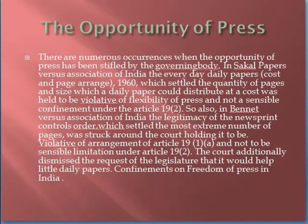There are numerous instances where freedom of press has been suppressed by the legislature. In Sakal Papers versus Union of India, the Newspaper (Price and Page) Order 1960 — which fixed the number of pages and size a newspaper could publish at a given price — was held to be violative of freedom of press and not a reasonable restriction under Article 19(2). Similarly, in Bennett Coleman versus Union of India, the validity of the Newsprint Control Order, which fixed the maximum number of pages, was struck down as violative of Article 19(1)(a) and not a reasonable restriction under Article 19(2).